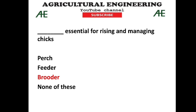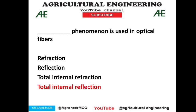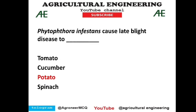Brooders are essential for raising and managing chicks — small chicks of poultry are raised and managed using brooders for 7 to 14 days, so option C is correct. The LSU type dryer is a continuous flow mixing type dryer — comment below which institute developed it. Total internal reflection phenomenon is used in optical fibers — option 4 is correct.